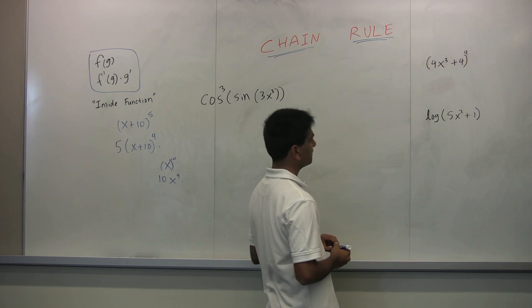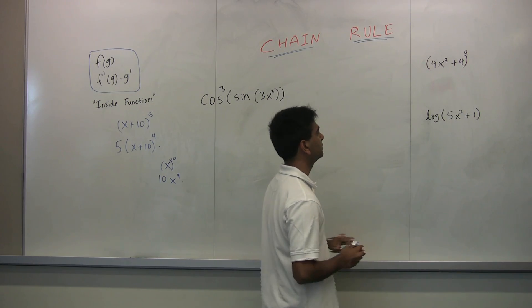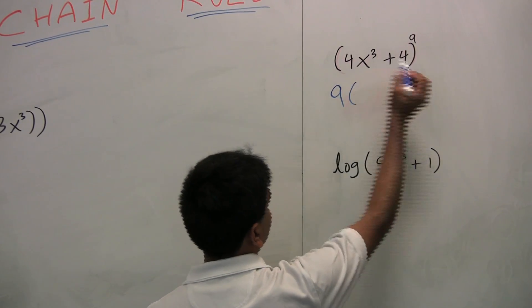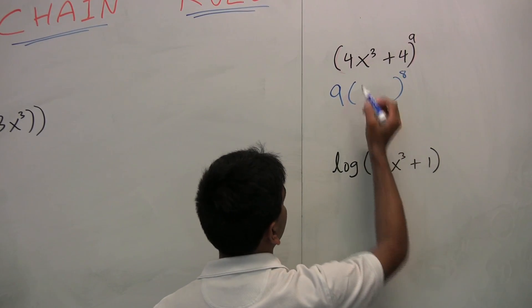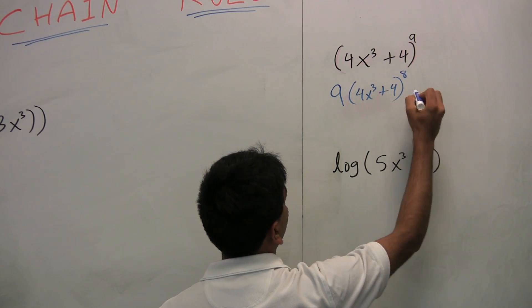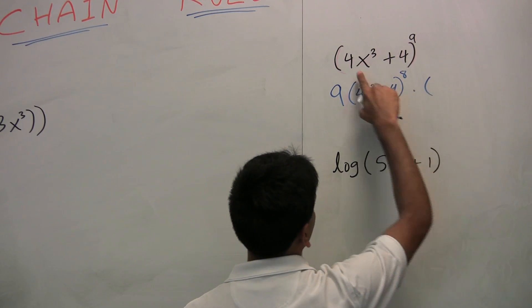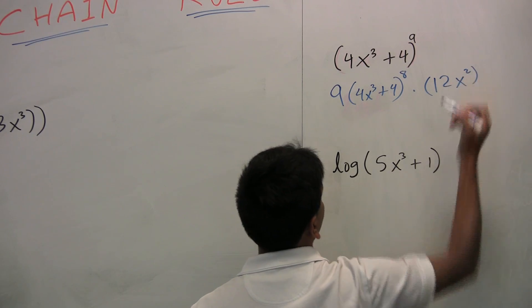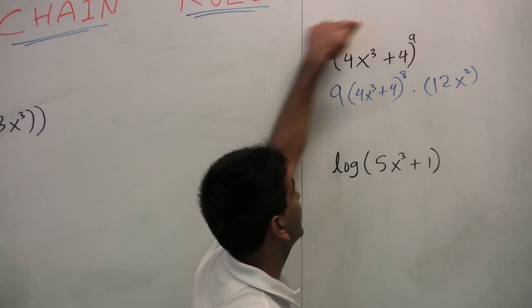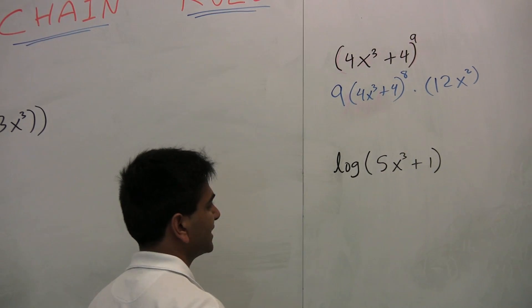The derivative of this bad boy over here, (4x³ + 4)^9 will be, let's see, 9 smiley face to the eighth power. And we can just fill that in over here: 9(4x³ + 4)^8. Now we multiply by the derivative of the inside function, which is 12x². This is the answer. That's how easy it is. Now you don't have to multiply that ninth power out. You don't have to foil it out.